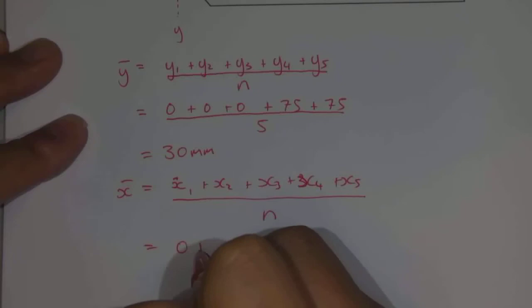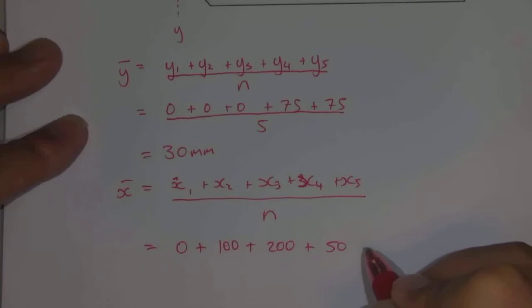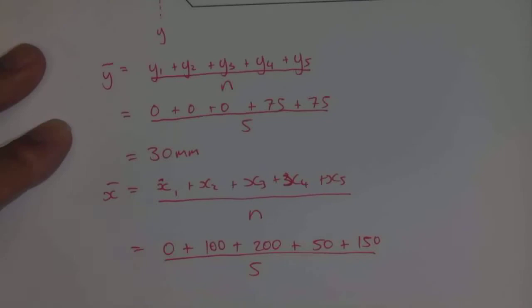So 0 plus 100 for x2 plus 200 for x3 plus 50 for x4, and plus 150 for x5 for that one there. And then that all divided by 5.